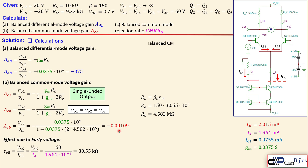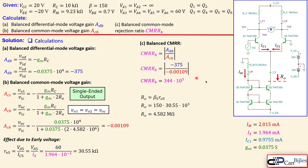The common mode rejection ratio is the absolute value of the balanced differential mode voltage gain divided by the balanced common mode voltage gain. This gives 344 times 10 to the power of 3, which is 110.7 dB. In the previous example, example four, using the Wilson current source, the CMRR was 104.7 dB — 6 dB less. We have now improved the CMRR by 6 dB as a direct result of doubling the output impedance.